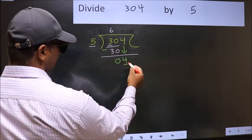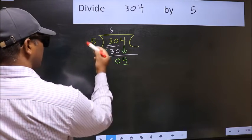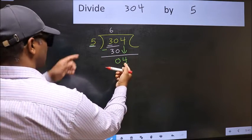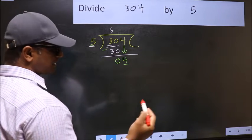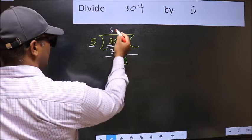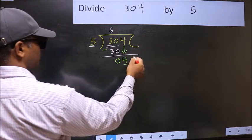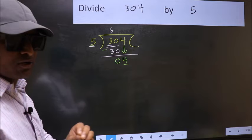Here we have 4 and here 5. 4 is smaller than 5. So what many do is they directly put dot and take 0, which is wrong.